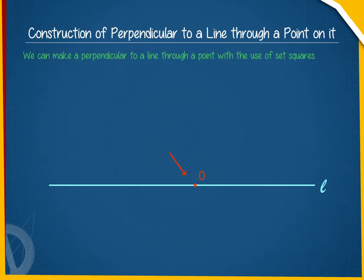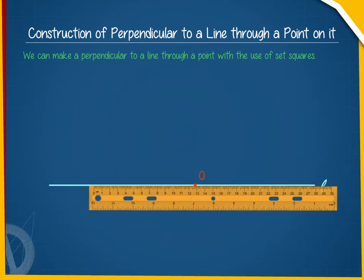First, keep the ruler so that one of its longer edges lies along the line L. Keep the ruler fixed. Place a set square ABC as shown here.